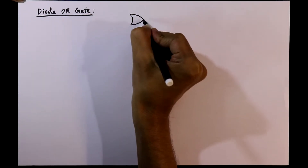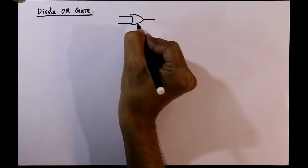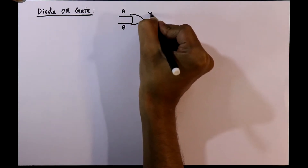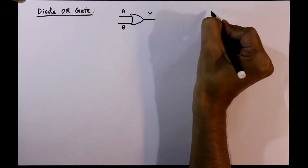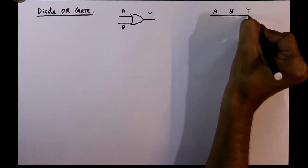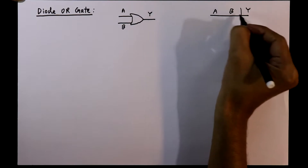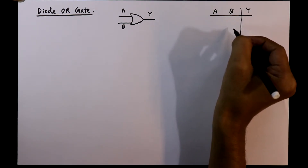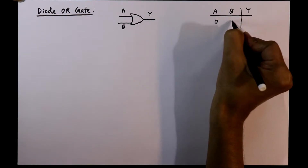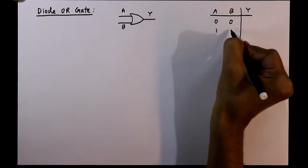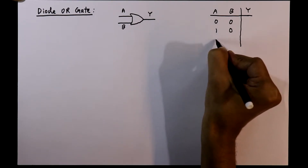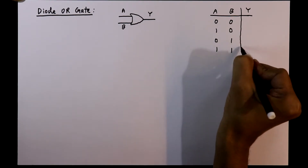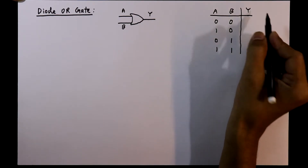The symbol of an OR gate has two inputs A and B, and Y is the output. Its truth table has two inputs A and B with Y as output, covering four conditions: when both are zero, A is one and B is zero, A is zero and B is one, and when both are one. We have to find out the output for each condition.